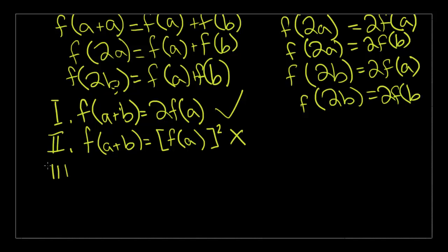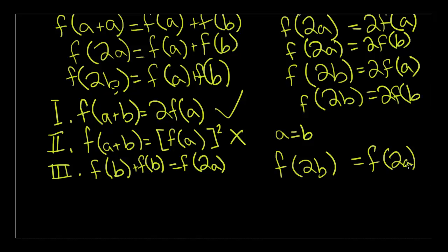Choice 3 is F of B plus F of B equals F of 2A. This is correct because, by the reasoning that since A equals B and B equals A, F of B plus F of B is going to equal F of 2B. F of 2B equals F of 2A, which is completely true because A equals B. So 2A is also equal to 2B. So that must be correct. The answer choice that includes 1 and 3 only is choice C. And that is your correct answer.